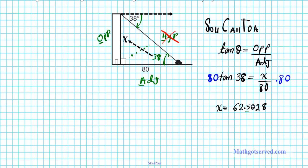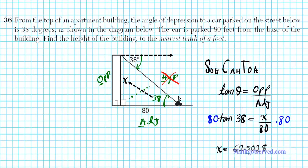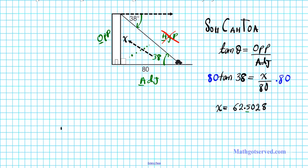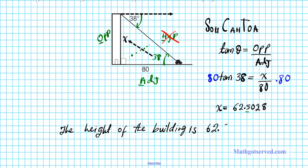We need to round to the nearest tenth of a foot. The digit after the tenths place is not 5 or greater, so we drop it. The height of the building is 62.5 feet.